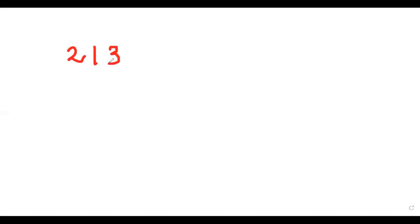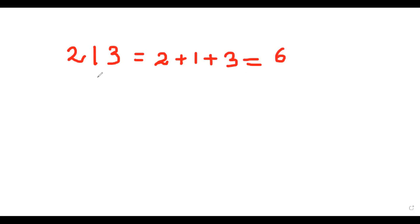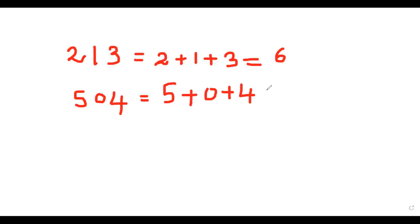For example, we find the Digital Root of 230. We add the digits of 230: 2 plus 3 plus 0, that is 5. So 5 is the Digital Root of 230. Another example: 504. That is 5 plus 0 plus 4, that is 9. So 9 is the Digital Root of 504.